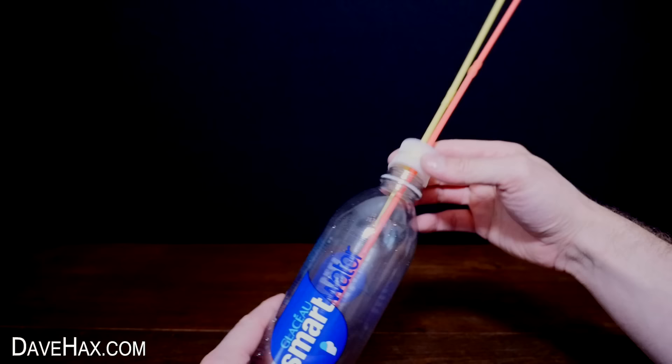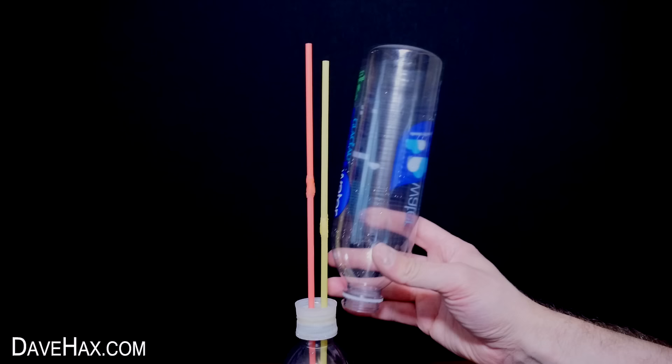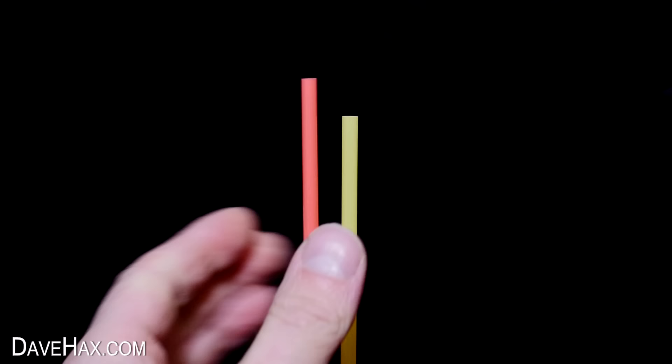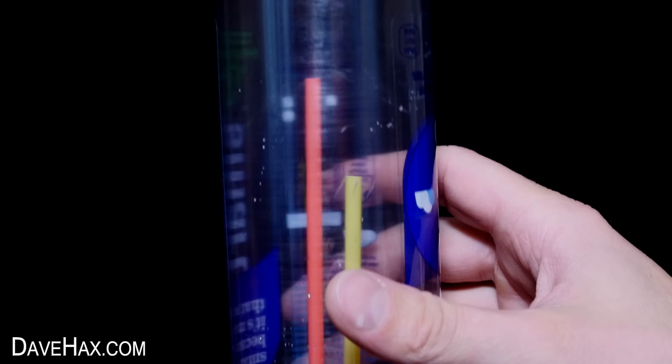Once it's all dry, we can screw it back onto the bottle and it should look like this. Next, we need to measure up the straw lengths against another bottle and we need to cut down the yellow one a little so that it stops about an inch off the end of the bottle.